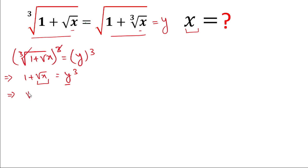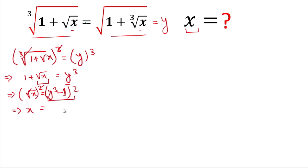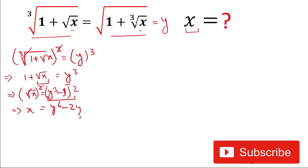From here we calculate the value of x. We write: square root of x equals y cubed minus 1. Now squaring both sides, the square and square root cancel, so x equals (y cubed minus 1) squared. Expanding using the (a minus b) squared formula: x equals y to the power 6 minus 2y cubed plus 1. We'll call this equation 1.